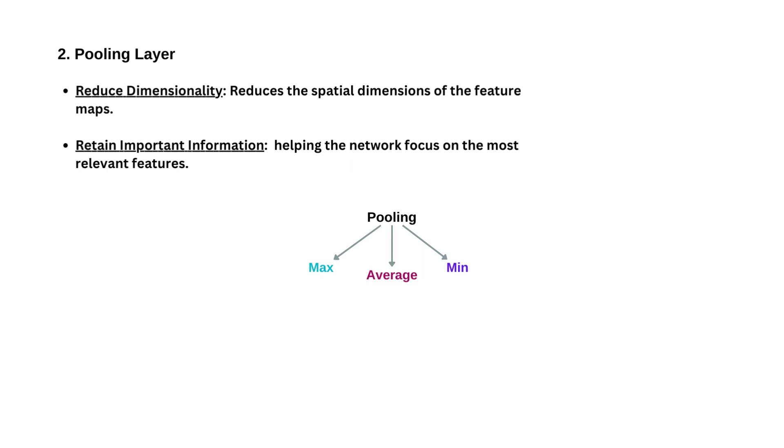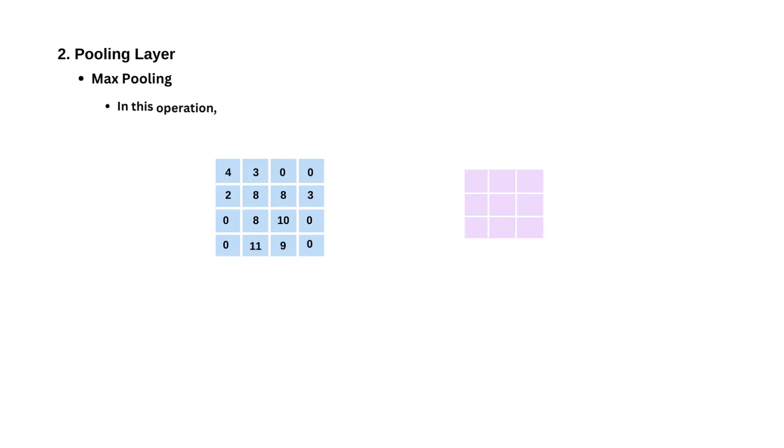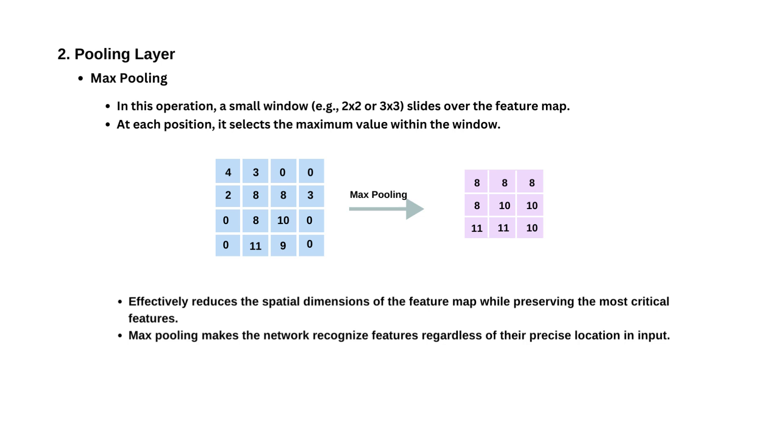Some popular type of poolings are max pooling, average pooling and min pooling. Let's see the working of max pooling. In max pooling, a small window, for example 2x2 or 3x3, slides over the feature map. Let's say we have a 2x2 window. At each position, it selects the maximum value within the window. Here, for this window, the maximum value is 8 and the process goes on. The max pooling effectively reduces the spatial dimensions of the feature map while preserving the most critical features.